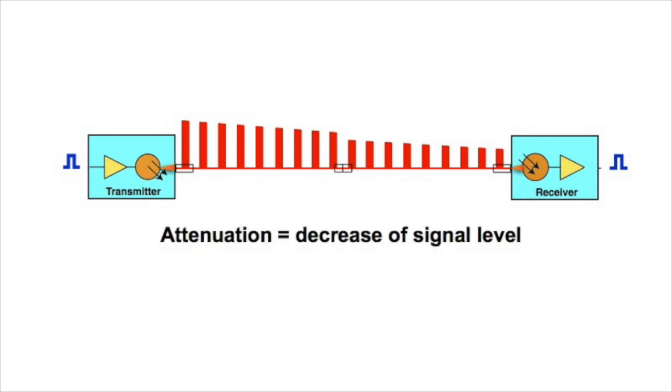What we want to focus on in this video is the attenuation of the optical signal, that decrease in the signal power level as it traverses the optical fiber from transmitter to receiver. Attenuation is the decrease in the signal level, and it's caused by the scattering and absorption in the optical fiber, and the losses as it traverses connections, like two connectors making a connection, or an optical splice.